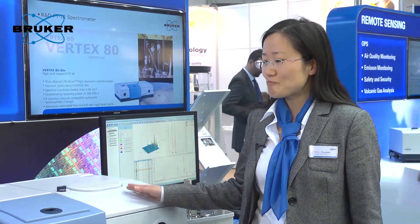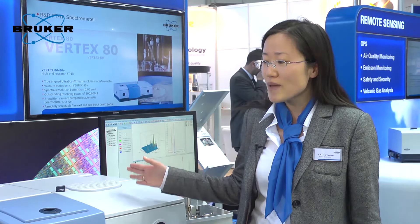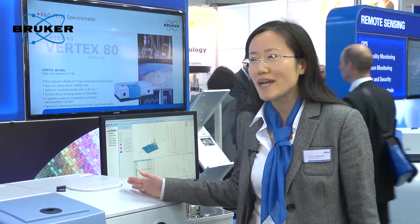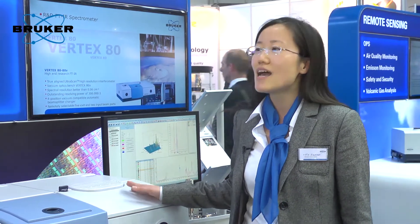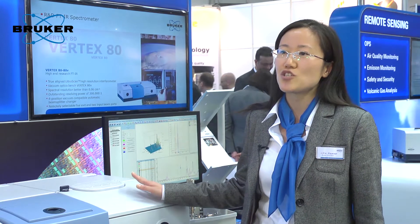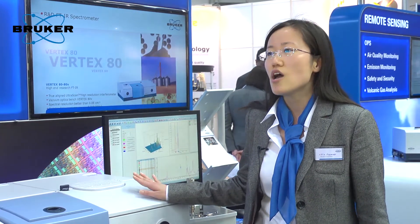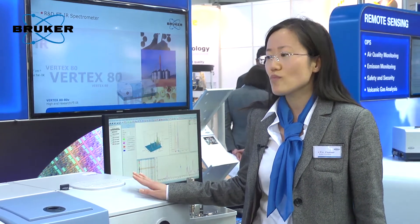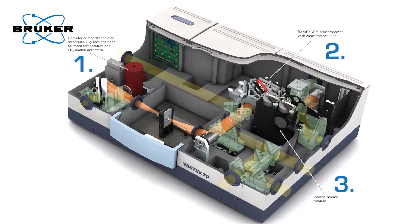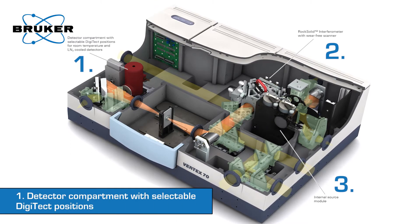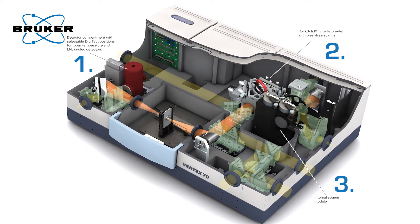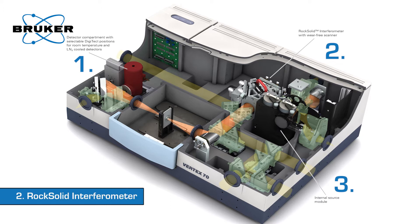Every spectroscopist dreams of a broad spectral range. To cover a broad spectral range from MIR to the far IR region, we have to change the main optical components and the detector — the IR source and the beam splitter.